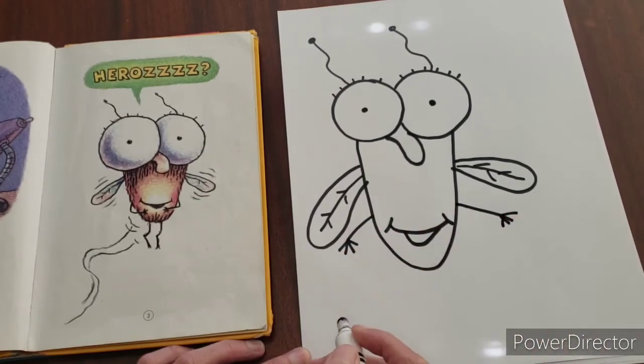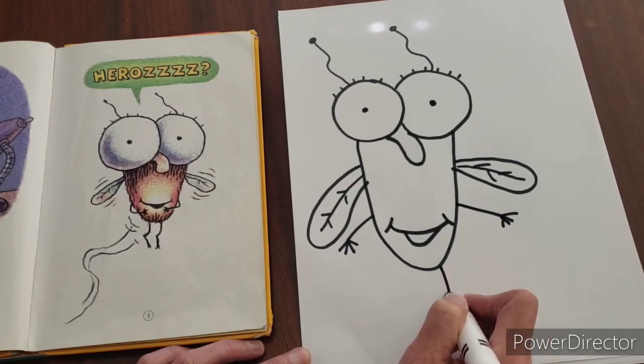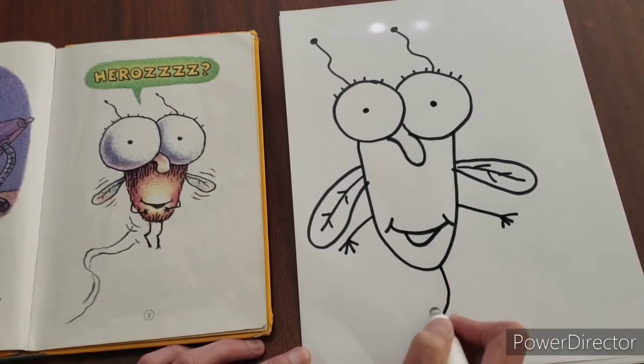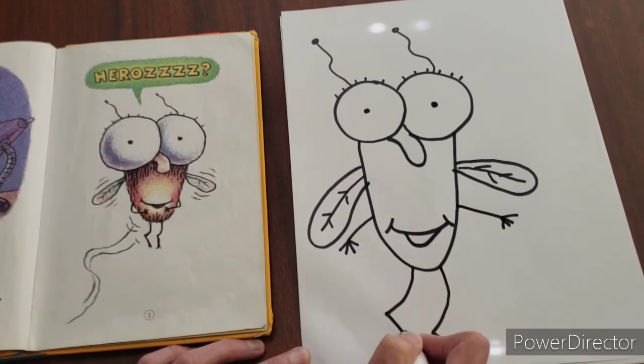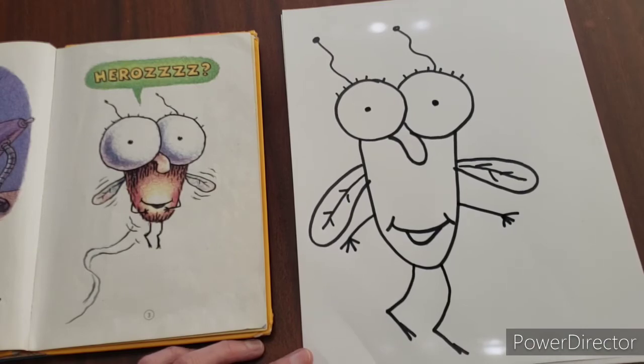After you've done that, you're just going to do a little leg and another little leg. Kind of has like little tiny toes or something coming out. You can make it like that. All right, I'll give you a second to catch up.